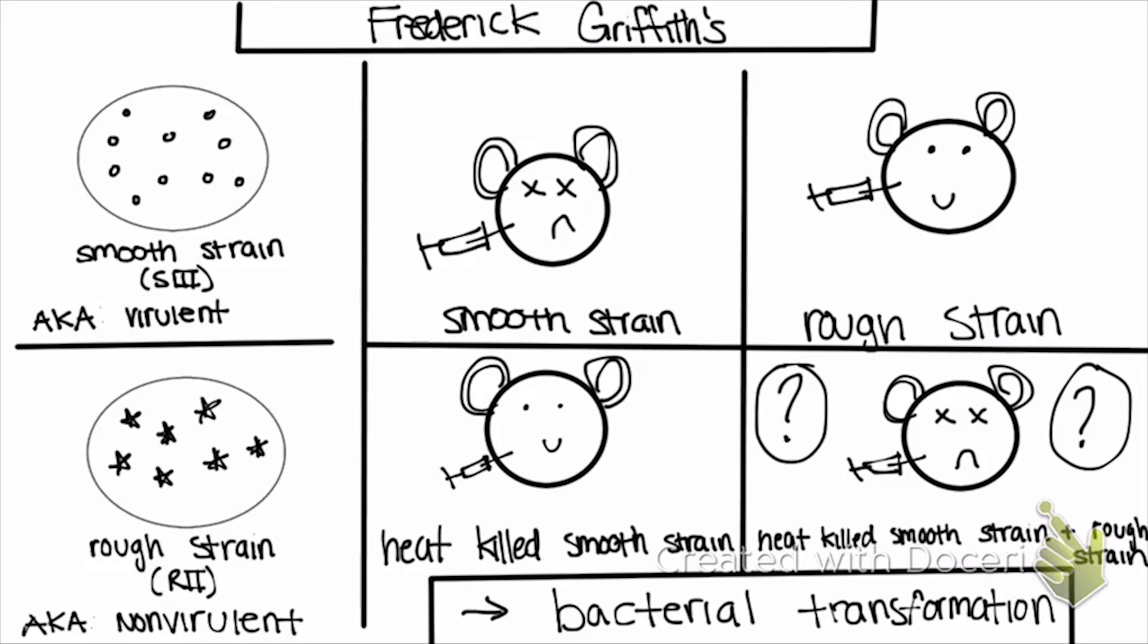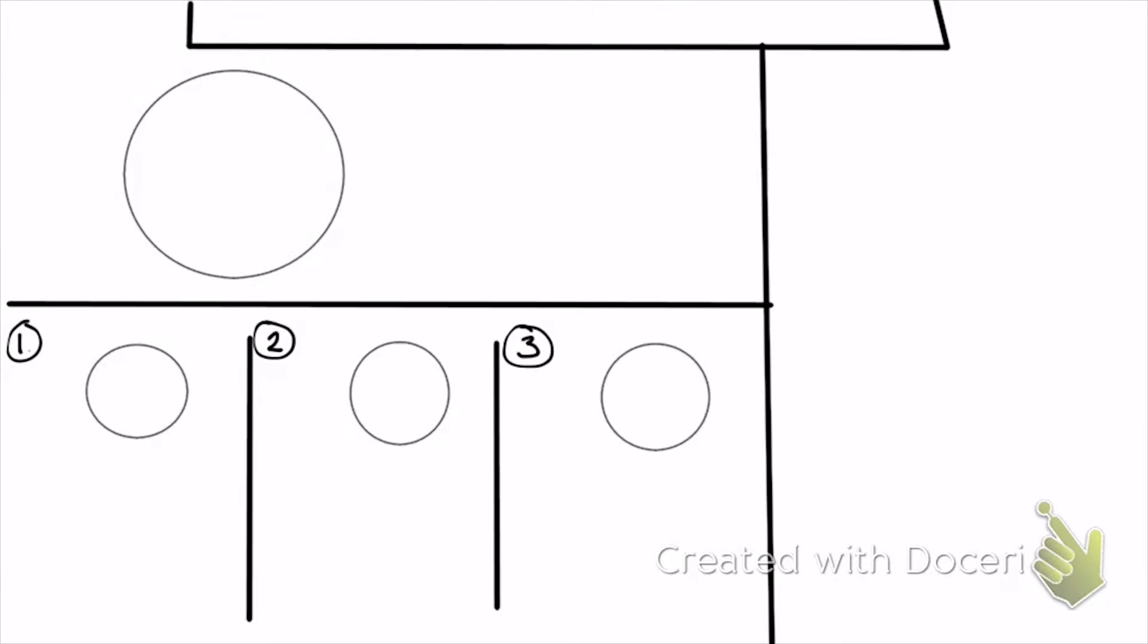This is where we end Griffith's observations and where we kick it off with Avery. Avery took the observations of Griffith and wanted to know why this happened or what was being passed on. So what was occurring? What he did was he took some heat-killed smooth strain with some rough strain and mixed it into a petri dish.